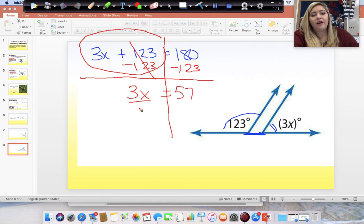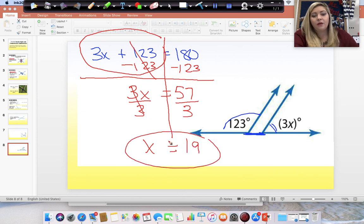And then we divide both sides by 3. This cancels and we are left with x is equal to 57 divided by 3, which is 19. So, 3 times x gives us 57. So, this angle is 57 degrees and x is equal to 19.